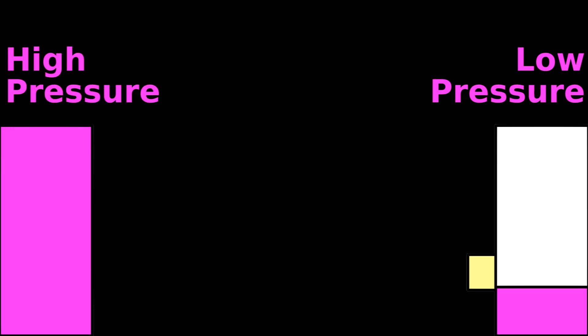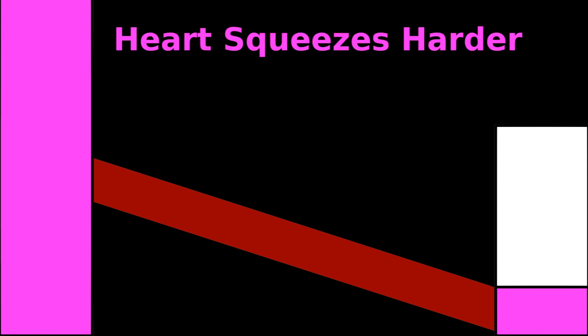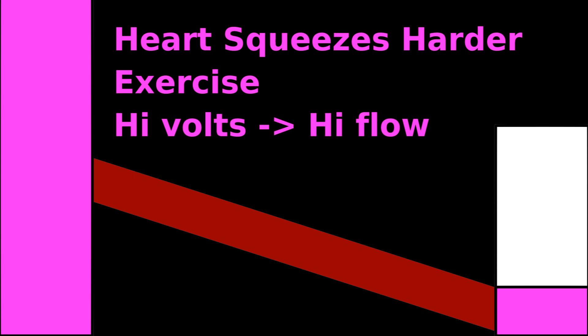Instead of electrons flowing, there are blood cells that flow, not through a wire, but through arteries. When the heart squeezes harder, like during exercise, voltage increases, making blood flow more quickly.